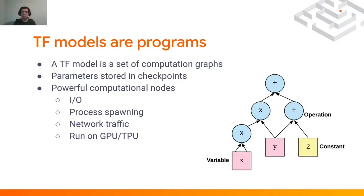Each parameter of a model is stored in checkpoints. Each node in the graph can do computation, and some of the nodes can be very powerful — they can write to disk, read from disk, create new processes, or send data over the network. Each node can even run on different architectures: some on CPU, some on GPU, some on a totally separate computer. In the latest version of TensorFlow, even the parameters can be distributed with distributed tensors to support large-scale models.